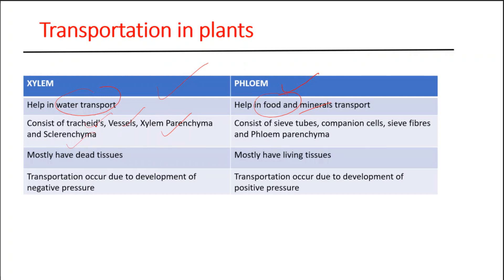Similarly, phloem is also made up of four different types of cells. First is sieve tube, second is companion cell, third is sieve fiber, and fourth is phloem parenchyma. The next difference between xylem and phloem is that most of the cells of xylem are dead, whereas in the case of phloem, most of the cells are living.